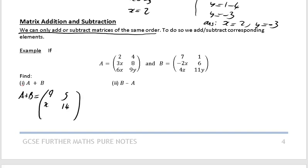And your third row, first column is going to be 6x plus 4z. We can't group those together. They are unlike terms. So 6x plus 4z. And then we've got 9y plus 11y to finish this off, which we can group, is 20y. And that's it.